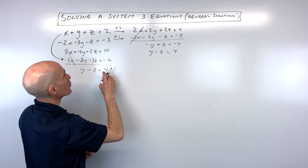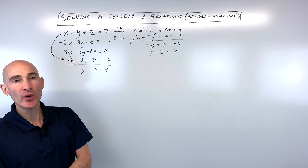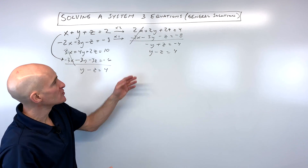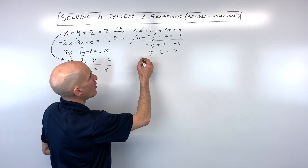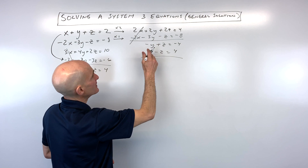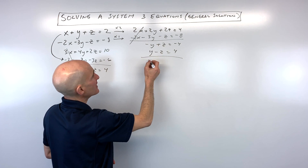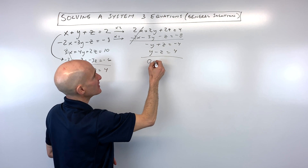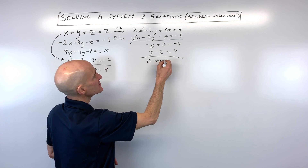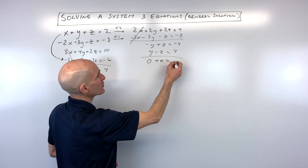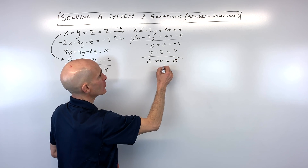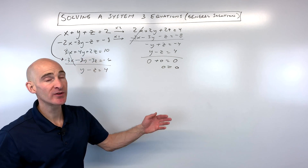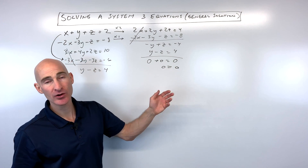Bringing that over, we're now down to two variables and two equations: negative y plus z equals negative four, and y minus z equals four. If we add straight down, the y's cancel to zero, the z's cancel to zero, and the four and negative four cancel to zero. We have zero equals zero.